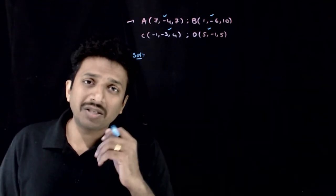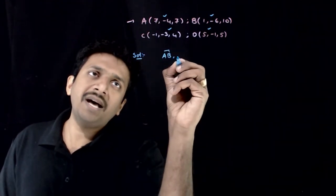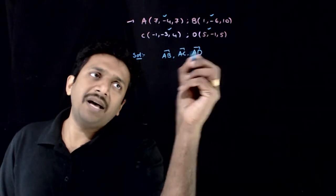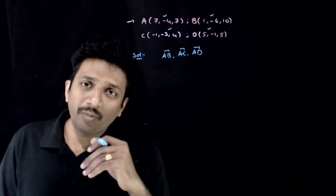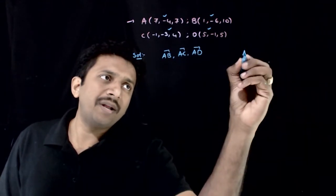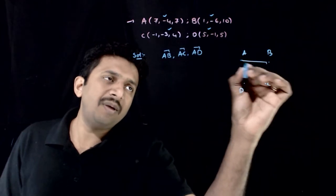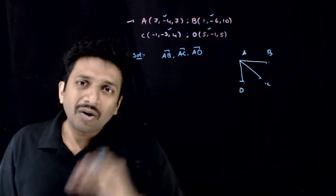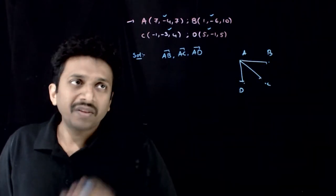How do we check whether the points are coplanar? We take vectors AB, AC, and AD. We take these three vectors and see whether they are coplanar. If 4 points ABCD are coplanar, we check AB, AC, AD — if all three are coplanar, then all 4 points are coplanar.